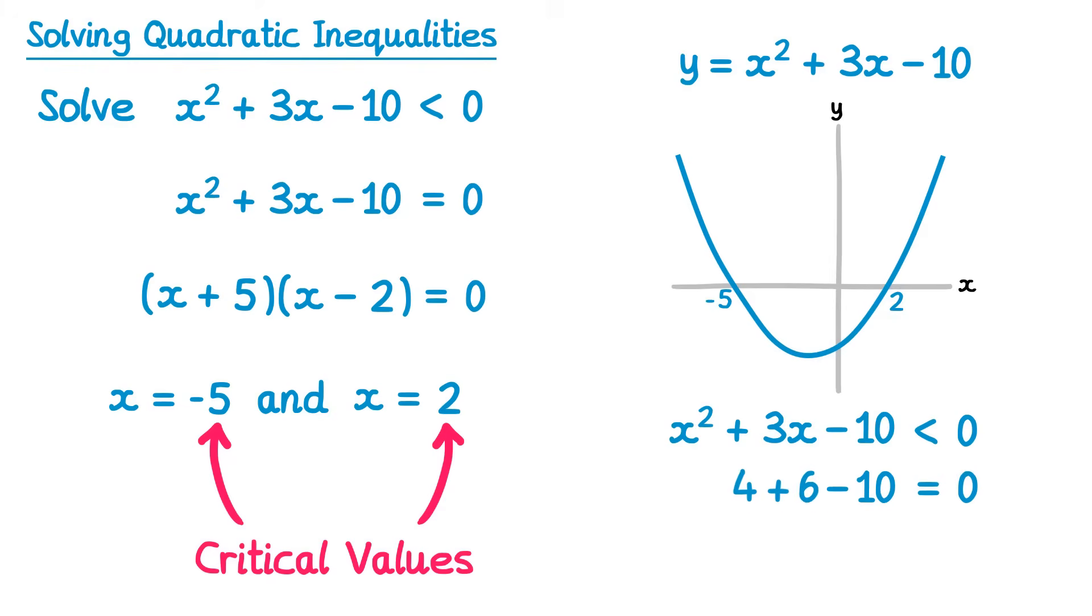The same works for the other critical value, negative 5. Negative 5 squared plus 3 lots of negative 5, take away 10, gives 25, minus 15, and 25 take 15, take 10, again is 0.